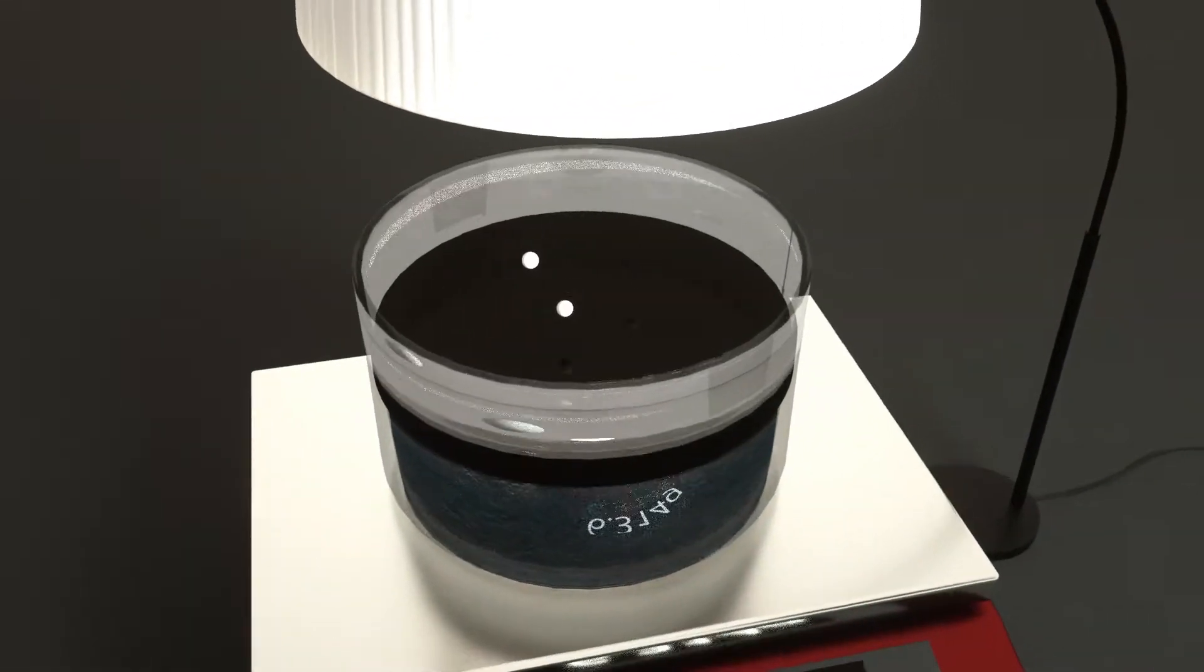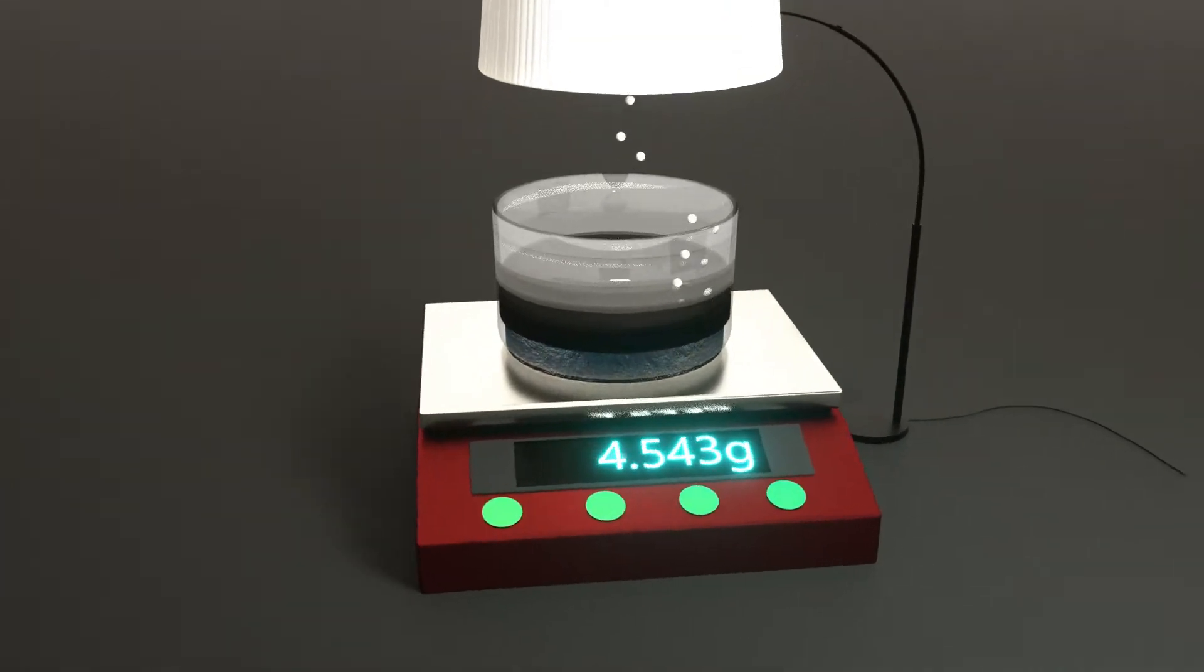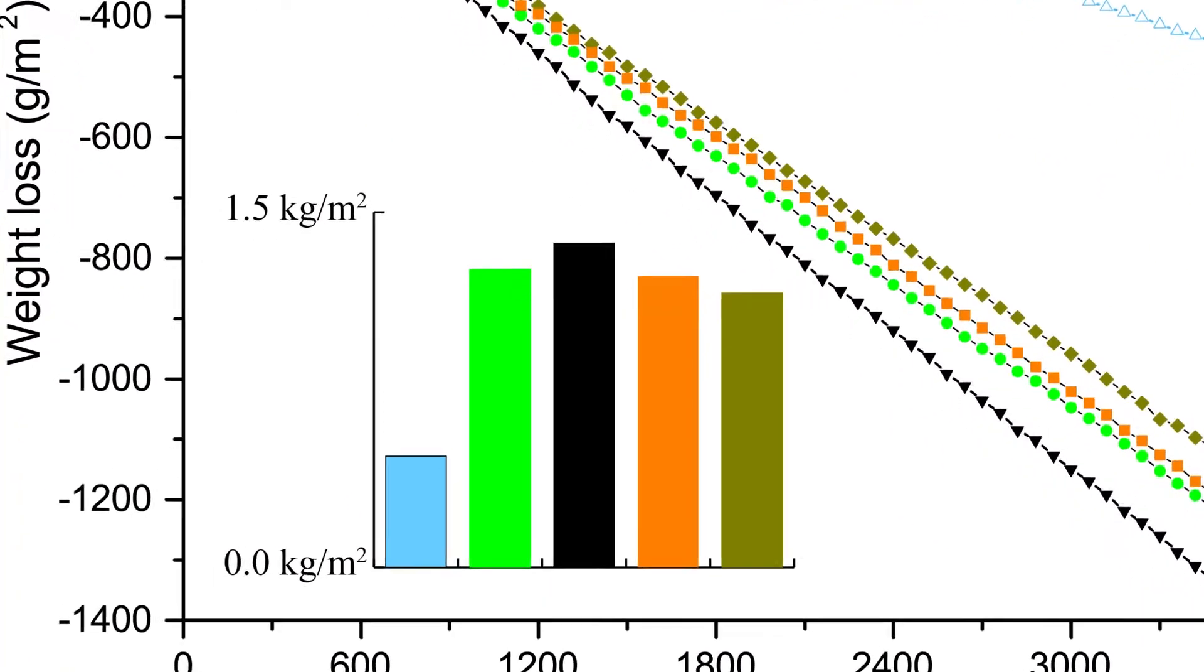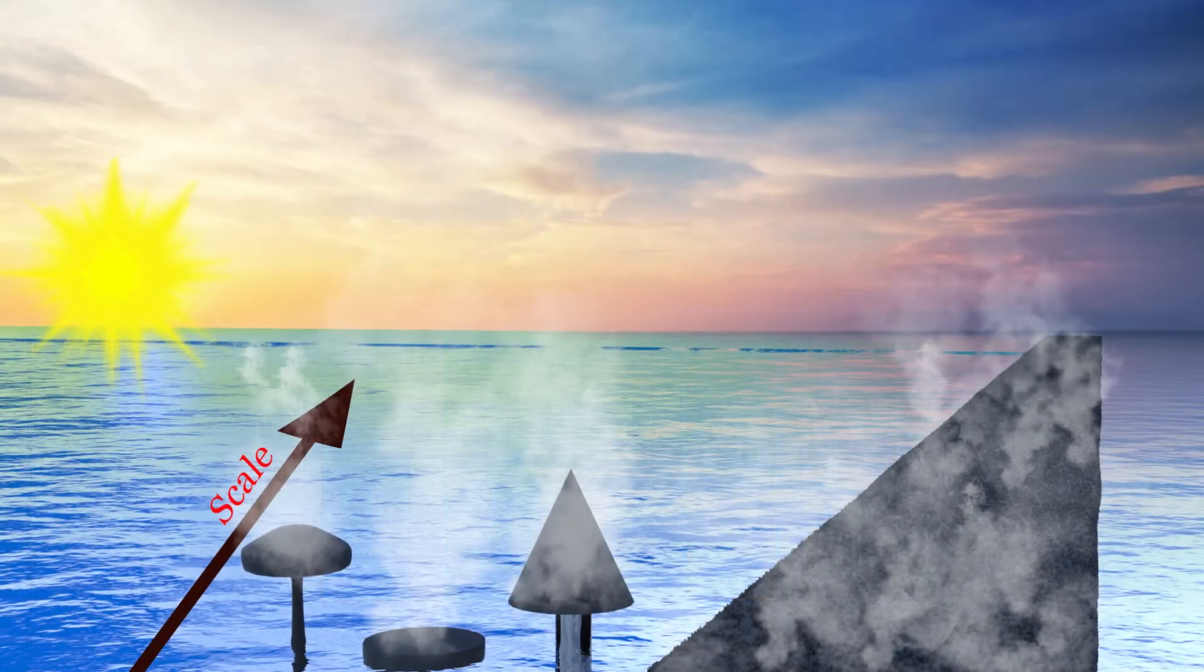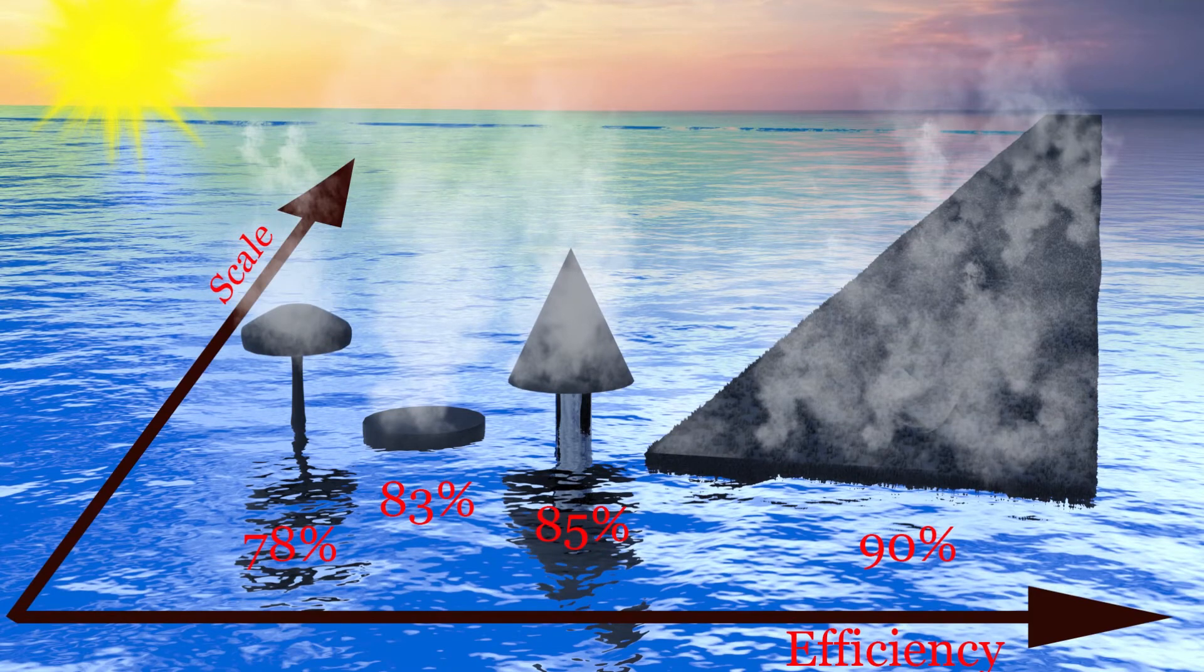Evaporation rates of these desalination films are measured under a solar simulator. A balance measures its weight, so the evaporated water can be calculated. One square meter graphene film can evaporate up to 1.37 kilograms of water per hour. It has the highest efficiency in the world at such length.